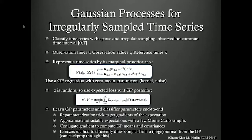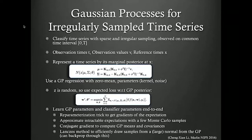Irregular sampling occurs all the time with hospital patients — labs and vitals are never taken at predictable times. The frequency depends on where they are: on the floor they're taken less frequently; in the ICU more frequently. We use the Gaussian process to estimate values at gridded time points, and then feed those into a classifier — specifically an LSTM, basically a recurrent neural net — for end-to-end training. This allows us to do inference pretty quickly using the reparameterization trick introduced by Kingma and Welling to get gradients of our expectation.